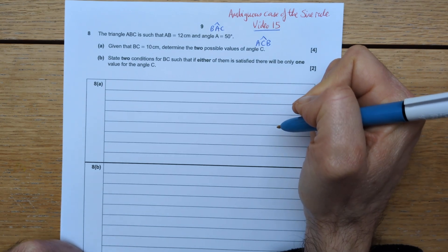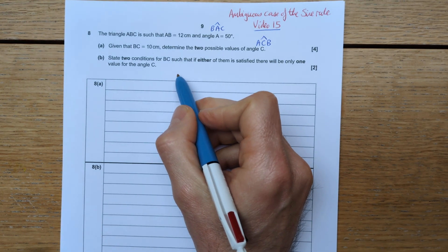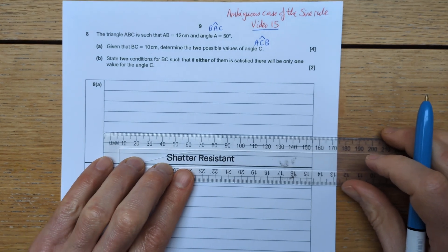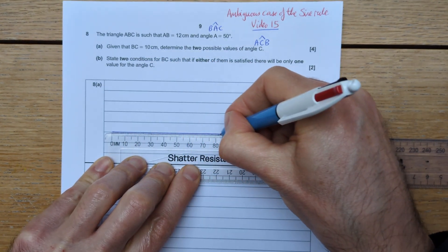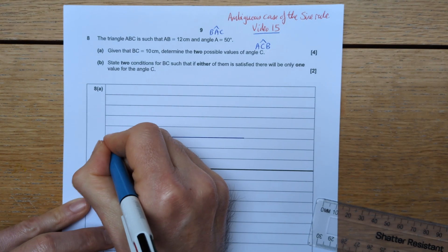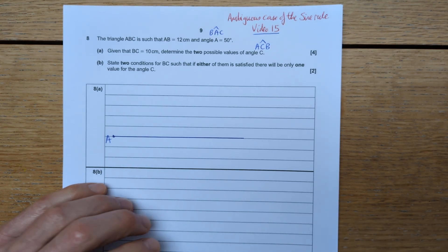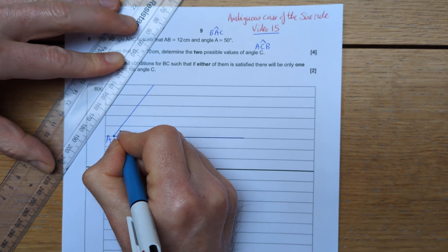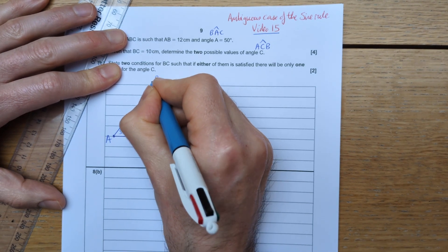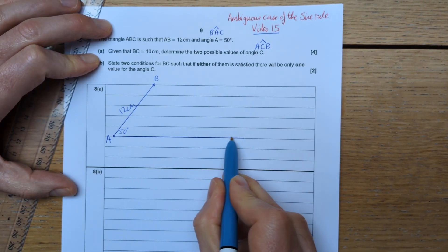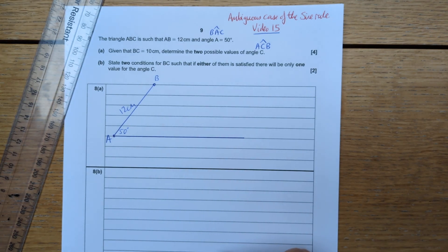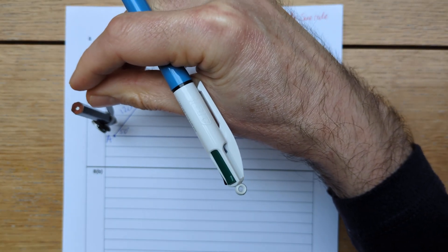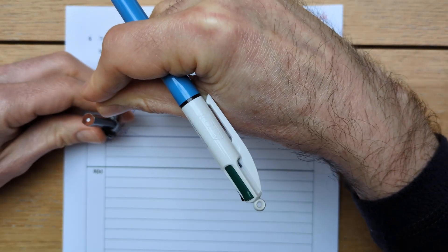I'm going to do a quick sketch to show you how there are two possible solutions. If AC is the base of this triangle, then A is a point with the angle at A being 50 degrees. The distance from A to B is 12 centimeters, and C is somewhere along this base. If I open up my compass to 10 centimeters and draw an arc, it cuts through two different places.